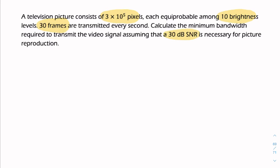And the question is, what's the minimum bandwidth? So we'll be using the Shannon-Hartley law. C is equal to B log 2, 1 plus the signal-to-noise ratio.